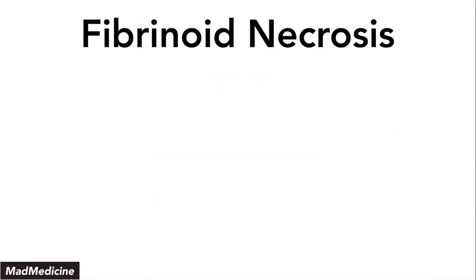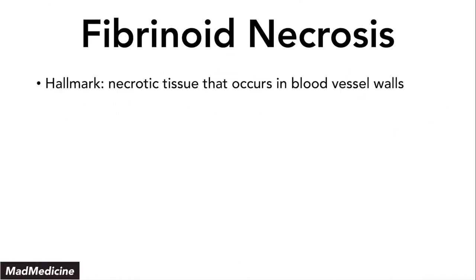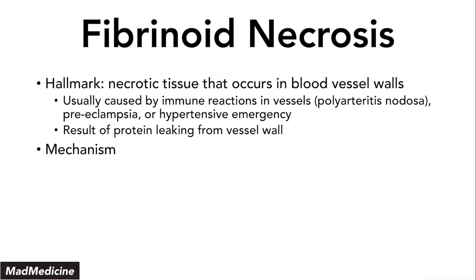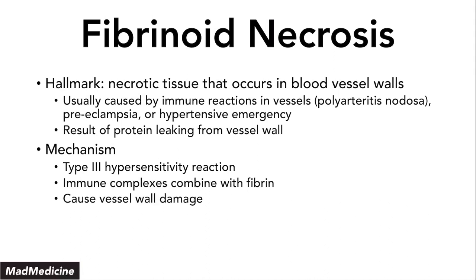The last type is fibrinoid necrosis. The hallmark of fibrinoid necrosis is tissue that becomes necrotic in blood vessel walls. This is usually caused by immune reactions in the vessels — think polyarteritis nodosa, preeclampsia, or a hypertensive emergency. It happens because proteins leak from the vessel wall, causing the tissue to become necrotic. The mechanism is a type 3 hypersensitivity reaction, where immune complexes bind to fibrin, leading to vessel wall damage and further protein leakage.